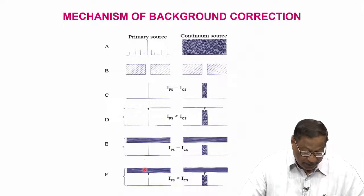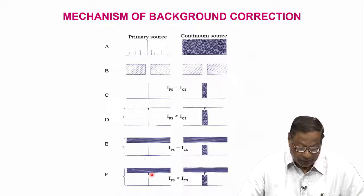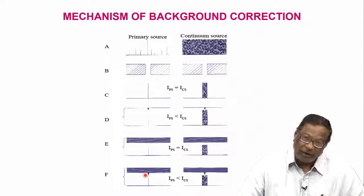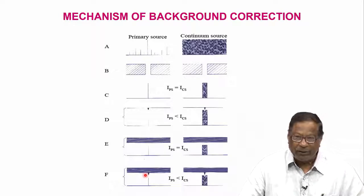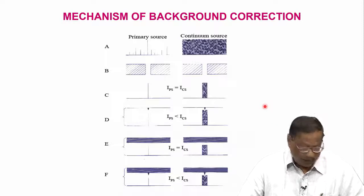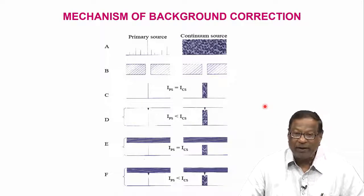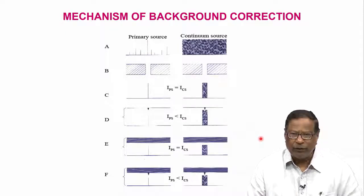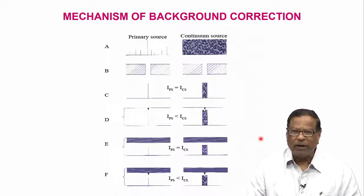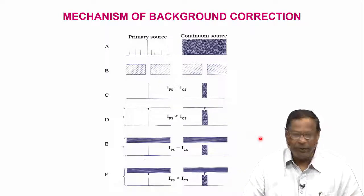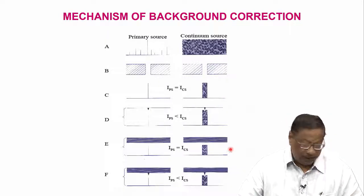That means it is the absorbance of the total background — not the atomic absorption — that we subtract. This is how the mechanism of background correction works. Along with the hollow cathode lamp, you switch on the deuterium lamp, and the electronics and other things will take care of the background.